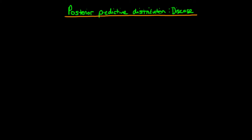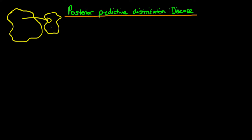In this video I want to go through an example of how we can generate the posterior predictive distribution, continuing our example of predicting disease prevalence within a population. We have some population, and originally we took a sample from it. Within that sample, x out of n individuals actually have the disease, allowing us to make a prediction about the likely values of theta — the proportion of individuals in the population who have the disease.